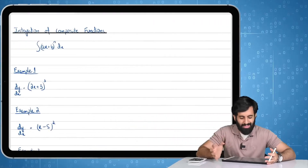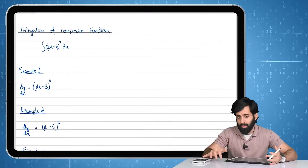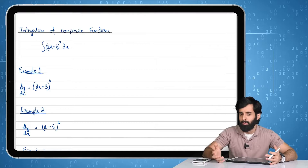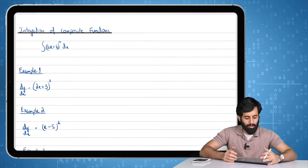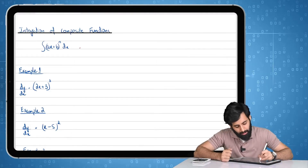In this video, we're going to be learning how to integrate composite functions. This one's slightly more difficult than the previous one. So what exactly does a composite function look like? You have ax plus b, and the whole thing is raised to a certain power, which we are integrating with respect to x. So how exactly do we do that?